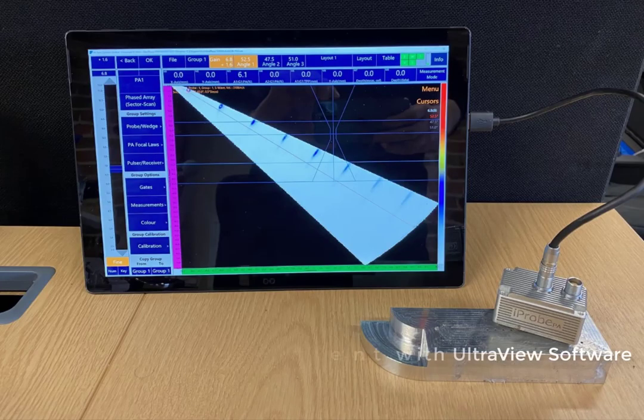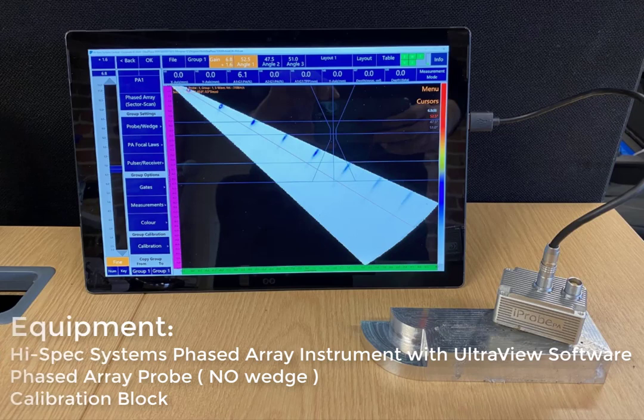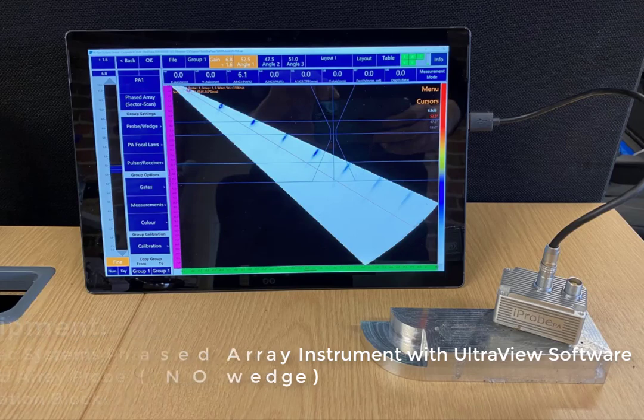The equipment needed for this calibration is a HighSpec Systems phased array instrument with UltraView software installed, a phased array probe without the wedge connected, and a calibration block. We will be using the iPro phased array system for this calibration.